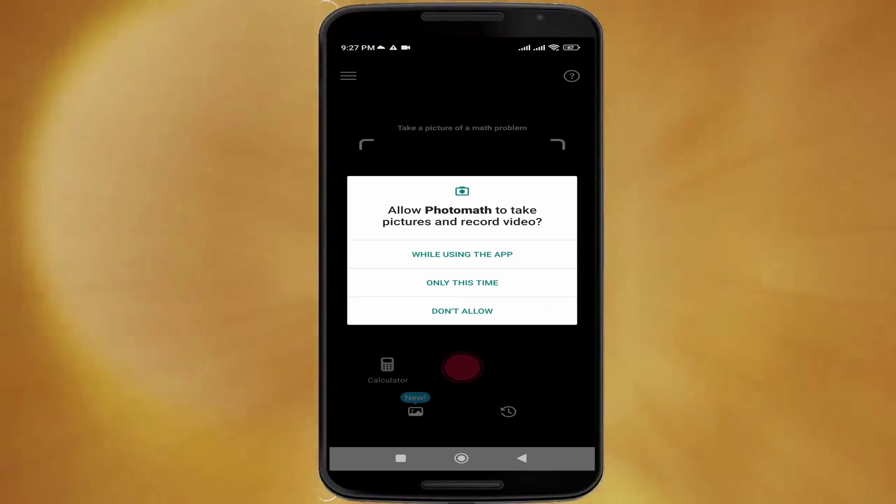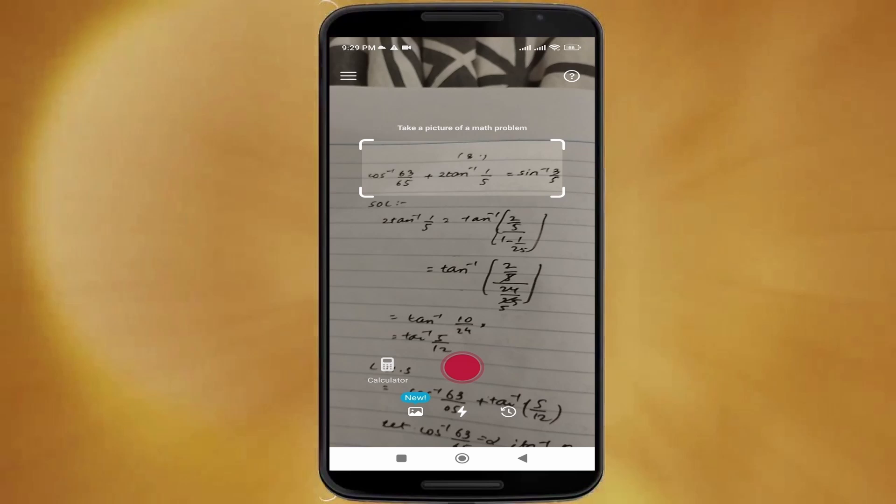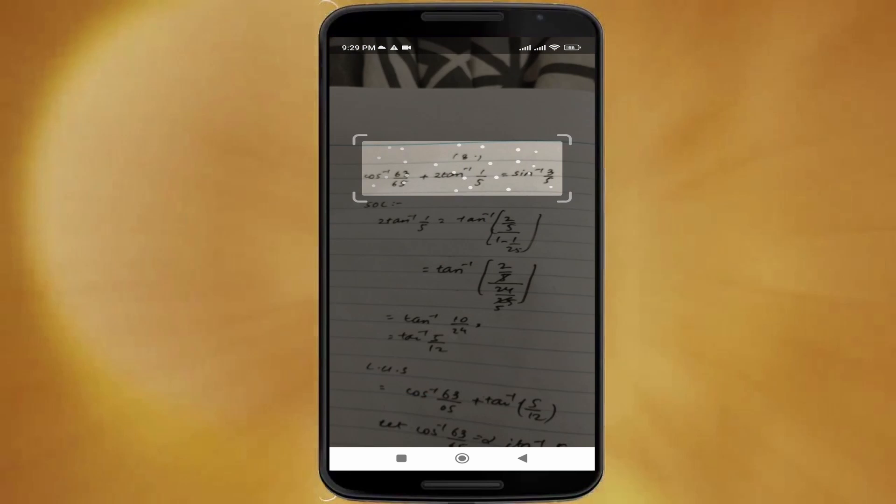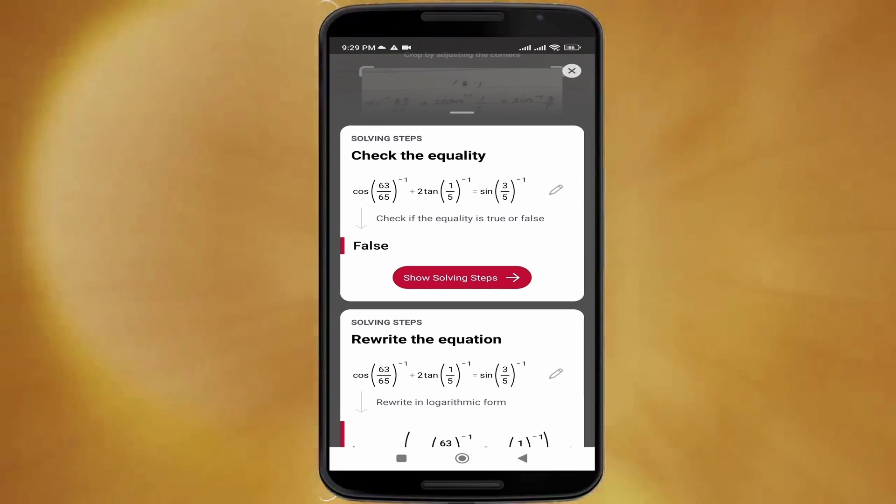Now they asked for permission to my camera, so I'm just gonna allow them. Here is a mathematical problem. Let's see how the application solves it. Okay, so it read the question perfectly and listed the result as false, which